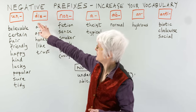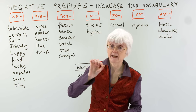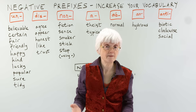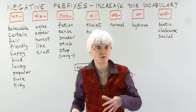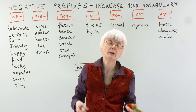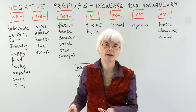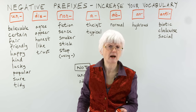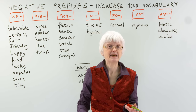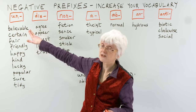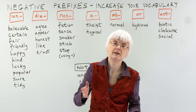Let's start by looking first of all at the prefix UN, which makes something negative. So, if something is believable, you believe it — that seems believable. If someone makes an excuse why they're late for class or for work, they had a believable reason. But if you think, 'Oh, that doesn't sound right, I think they're lying,' then their reason is unbelievable. That turns it to the negative.